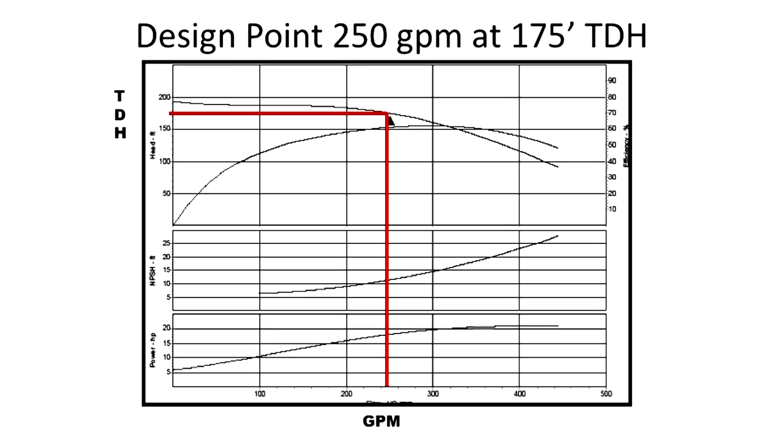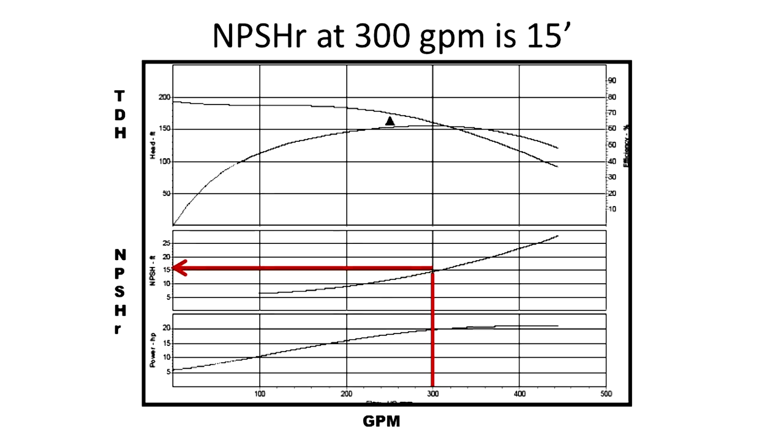The design flow and head are 250 GPM at 175 foot. The NPSH-R is shown as a curve on a lower plot, and you enter at a flow and connect with the NPSH-R curve, and read the NPSH-R from the y-axis. For instance, at 300 GPM, the NPSH-R is 15 foot.